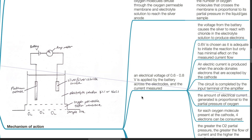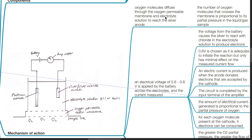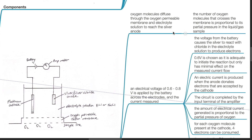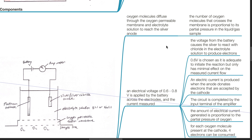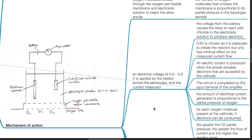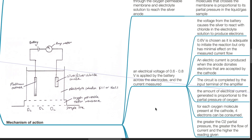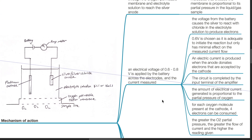Mechanism of action: Oxygen molecules diffuse through the oxygen-permeable membrane and electrolyte solution to reach the silver anode. The number of oxygen molecules that cross the membrane is proportional to its partial pressure in the liquid or gas sample. An electrical voltage of 0.6 to 0.8 volts is applied by the battery across the electrodes and the current is measured. The voltage causes the silver to react with chloride in the electrolyte solution to produce electrons. 0.6 volts is chosen as it is adequate to initiate the reaction but has only minimal effect on the measured current flow.